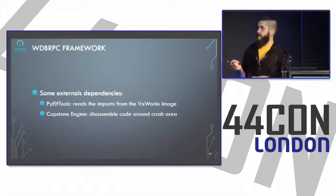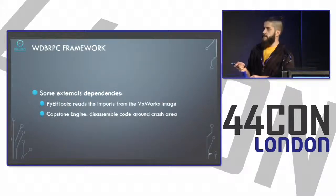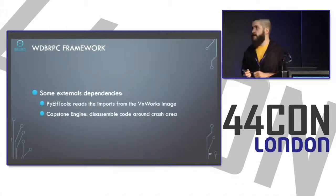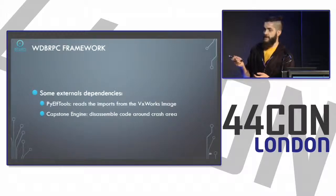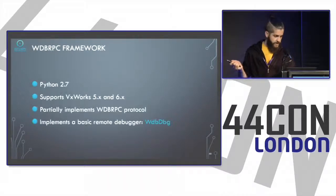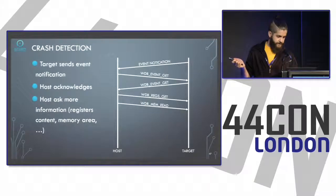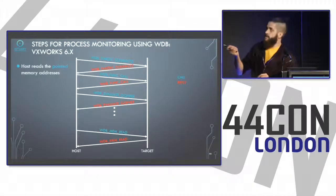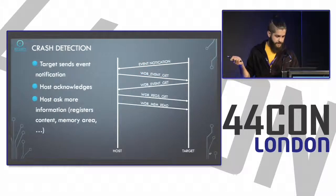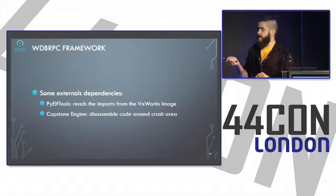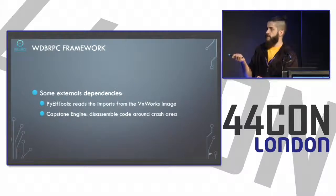The framework has external dependencies: PyELF tools to read the VxWorks image, which is the OS image compiled when you create a project. Reading it lets me extract all imported function addresses — needed when using the WDB function call, which requires providing the entry point address of the function to call on the target. I also used the Capstone disassembly engine to disassemble code around crash areas, though that feature is not yet fully implemented.